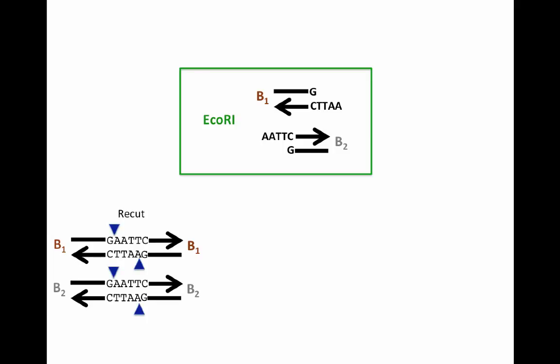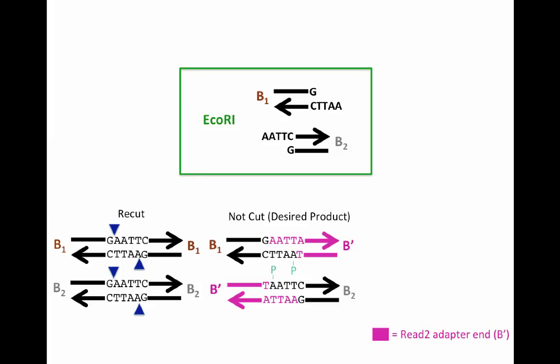On the other hand, when the B1 or B2 fragments are ligated to the READ-2 adapters, depicted as B' DNA fragments in pink, these cannot be recut because the B' adapters do not perfectly recreate the EcoRI restriction site. Note that the overhang is identical, AATT, but we have substituted an AT base pair in the adaptor for a GC-based pair in the EcoRI recognition site.